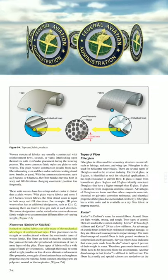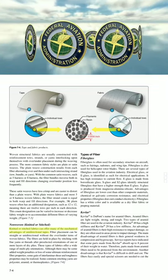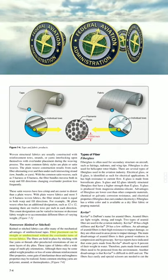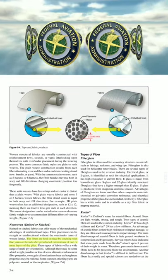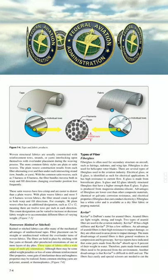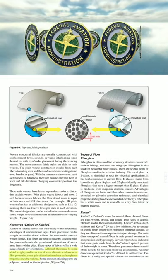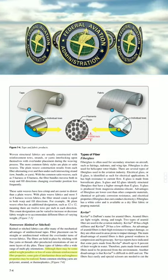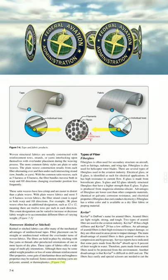Non-woven, knitted or stitched fabrics can offer many of the mechanical advantages of unidirectional tapes. Fiber placement can be straight or unidirectional without the over/under crimp of woven fabrics. The fibers are held in place by stitching with fine yarns or threads after pre-selected orientations of one or more layers of dry plies. These fabrics offer a wide range of multi-ply orientations. Although there may be some added weight penalties or loss of ultimate reinforcement fiber properties, some gain of interlaminar shear and toughness properties may be realized. Common stitching yarns include polyester, aramid, or thermoplastics.